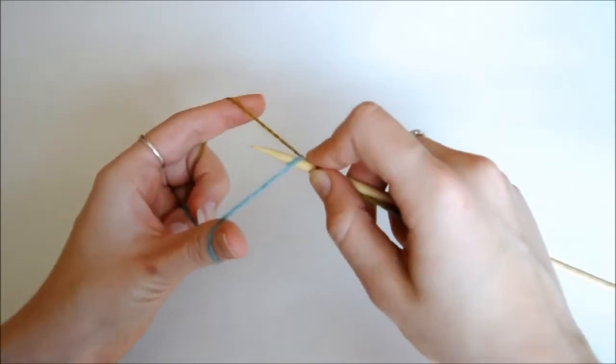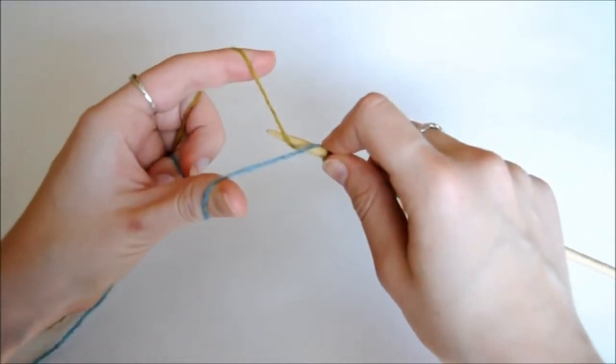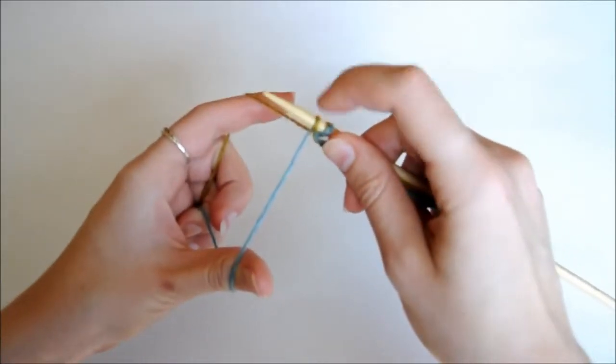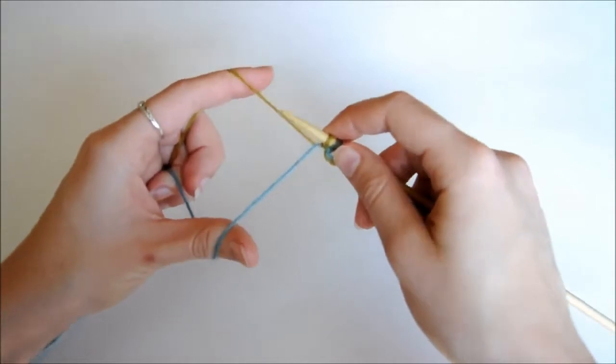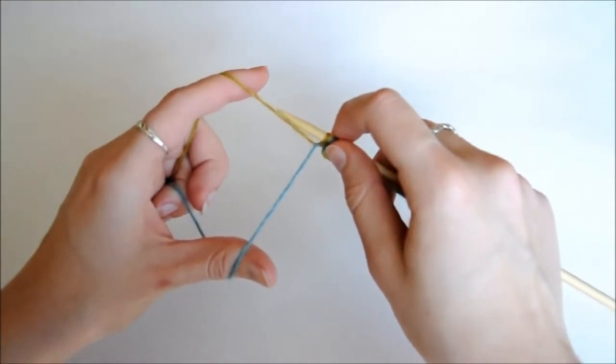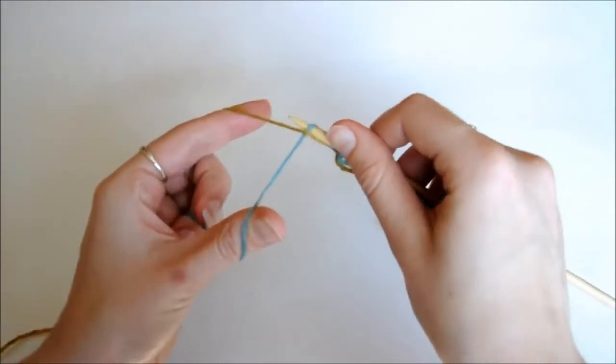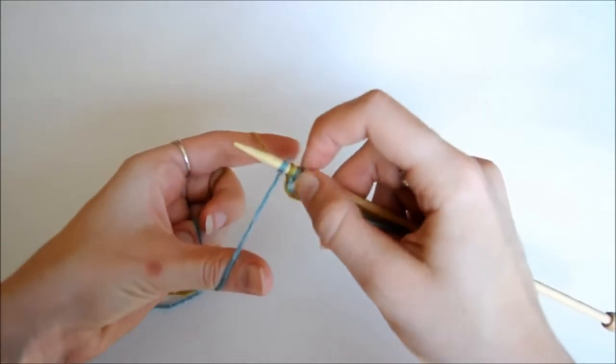So we're going to go underneath the blue, around and over, and under the yellow, and there's our first stitch. And we're going to repeat that, doing the opposite to create the second, so we're going to go underneath the yellow, around and over the blue, and bring it back under, and there's our second stitch.